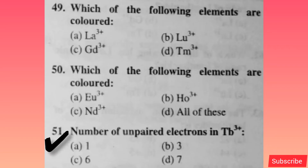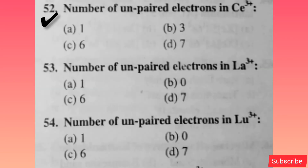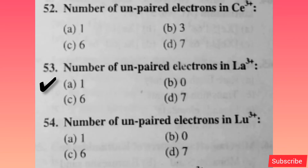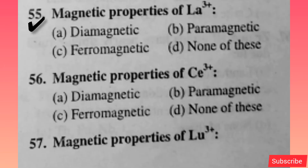Number of unpaired electrons in Tb3+? Option C is correct. Number of unpaired electrons in Ce3+? Option A is correct. Number of unpaired electrons in La3+? Option B is correct. Number of unpaired electrons in Lu3+? Option B is correct.